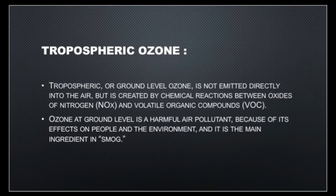Tropospheric ozone is also known as ground level ozone because it is not emitted directly into the air, but it is created by chemical reactions between NOx and VOCs. Oxides of nitrogen and volatile organic compounds react in the presence of sunlight, and as a result ozone gas is generated. Since this ozone gas is generated at ground level and within the troposphere, the first layer of the atmosphere, it is called tropospheric ozone or ground level ozone.